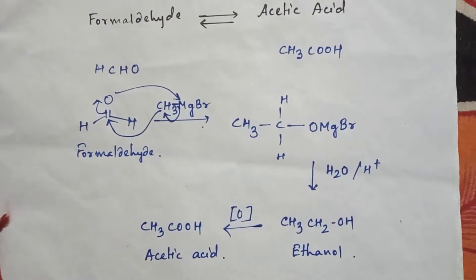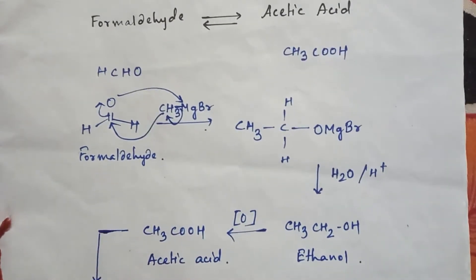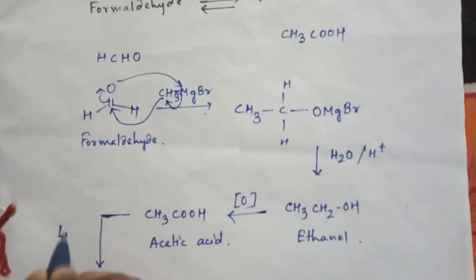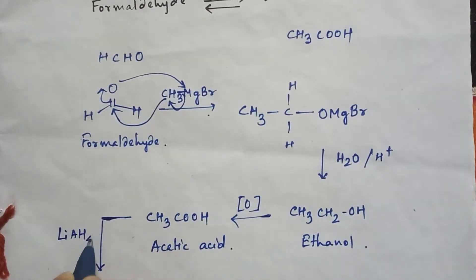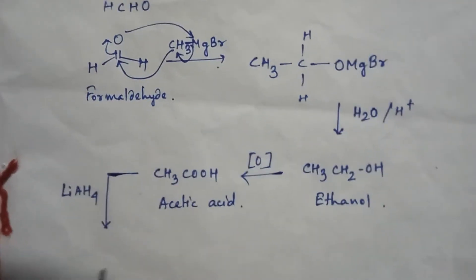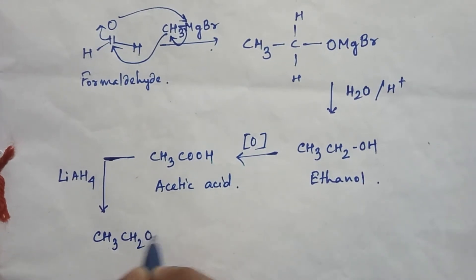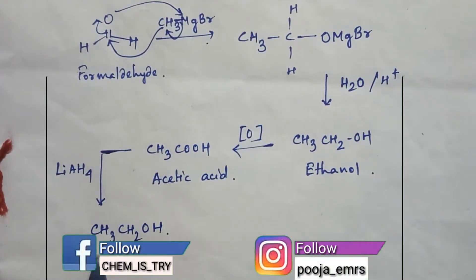Now we will learn how to convert from acetic acid to formaldehyde. So now if you do reduction of this acid by adding lithium aluminum hydride, then this acid will convert into again alcohol, so CH3CH2OH, this is ethanol.